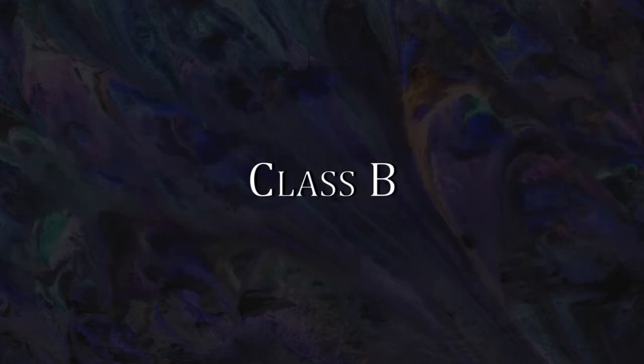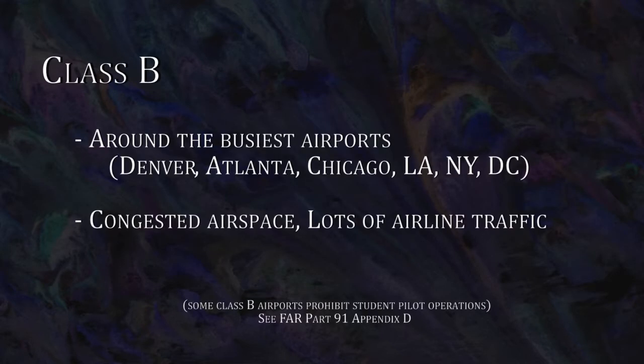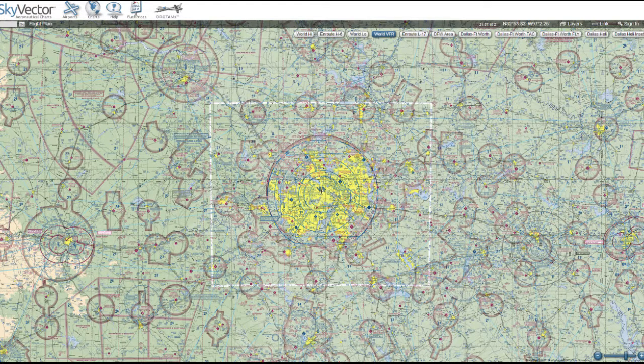Class Bravo airspace surrounds the nation's busiest airports — Denver, New York, LA, places like that. This is where it's super congested with a lot of airline traffic. There's no better way to start than just by looking at an example, so we'll put in DFW, Dallas-Fort Worth, Texas.